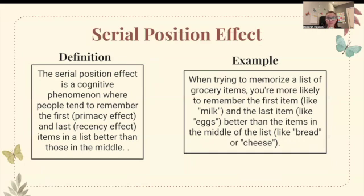The serial position effect is a cognitive phenomenon where people tend to remember the first and last items in a list better than those in the middle. So when trying to memorize a list of grocery items, you're more likely to remember the first items, like milk, and the last items, like eggs, better than the items in the middle of the list, like cheese or bread.